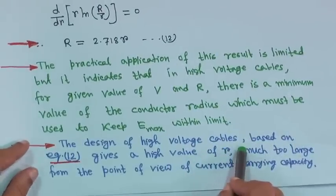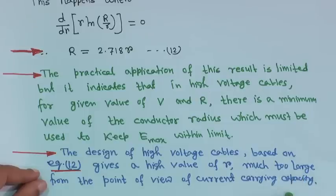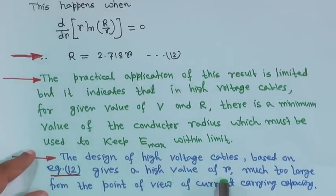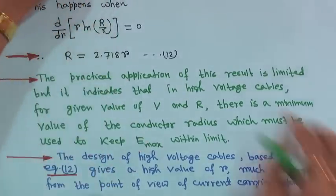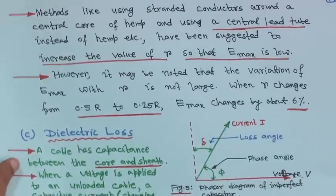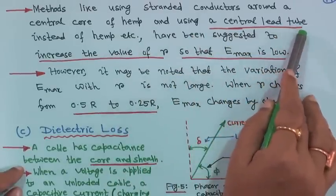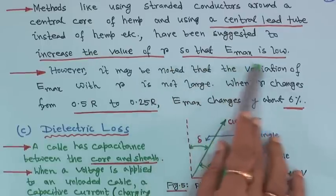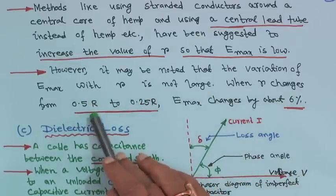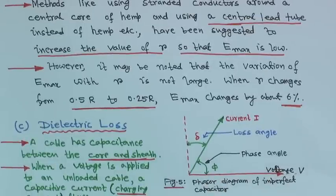The design of high voltage cables based on this equation gives a high value of r which is much too large from the point of view of current carrying capacity. Methods like using stranded conductors around a central core or using a central lead tube instead have been suggested to increase r so that E_max is low. However, the variation of E_max with r is not large — when r changes from 0.5R to 0.25R, E_max changes by only about 6 percent.